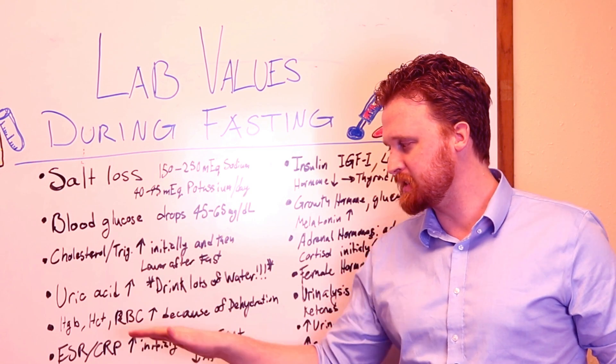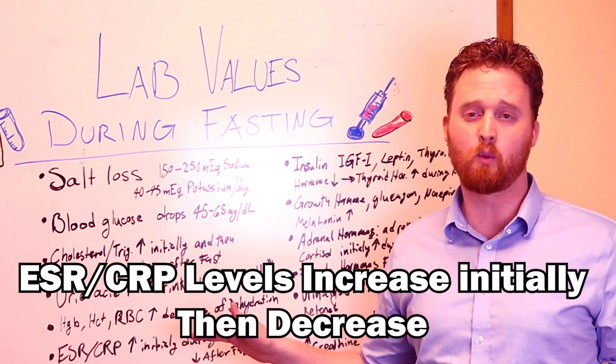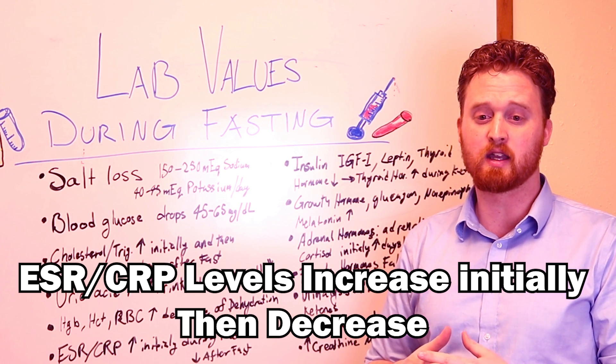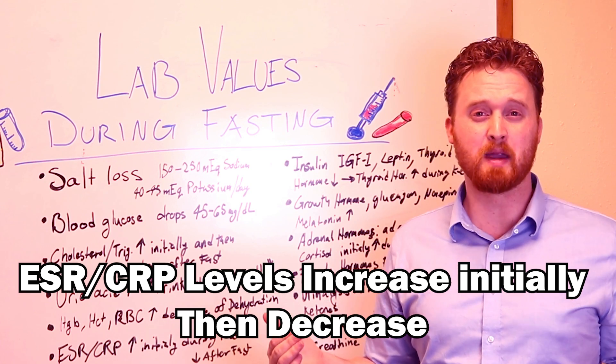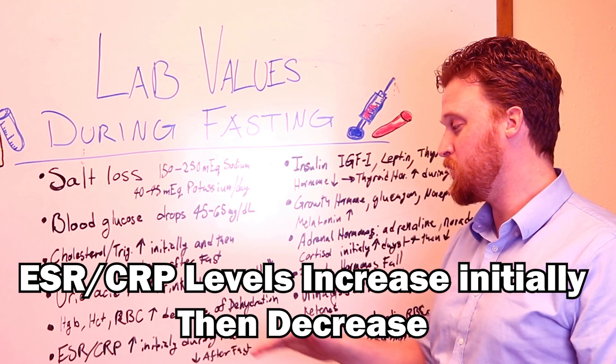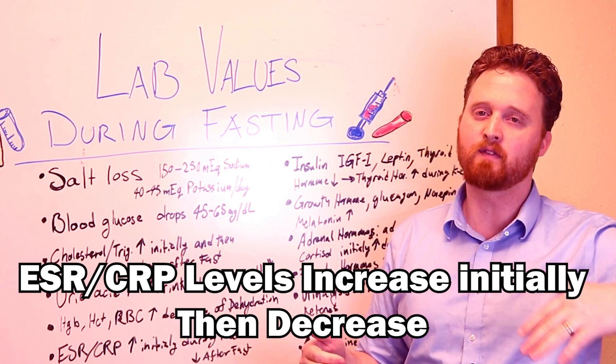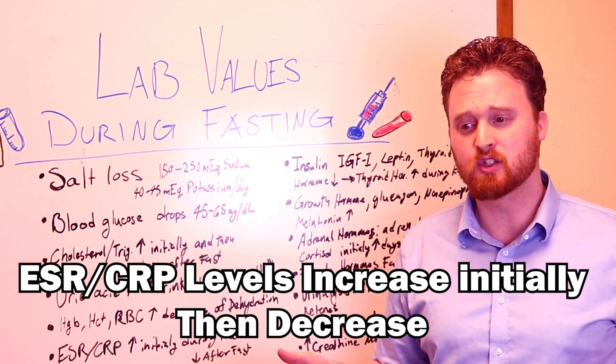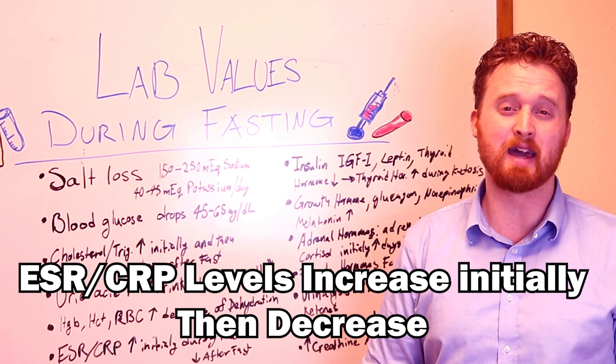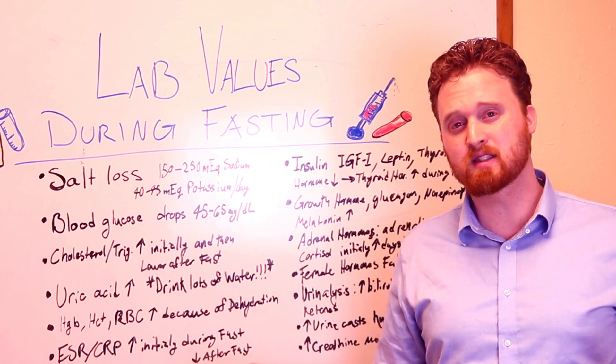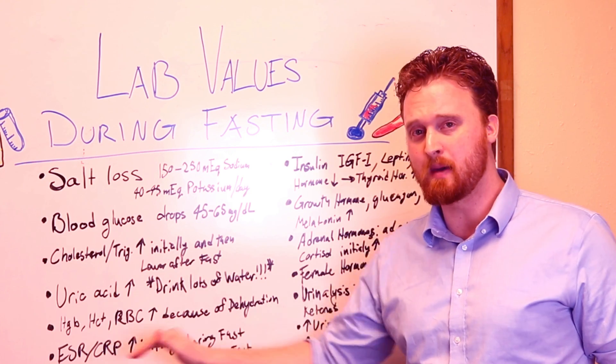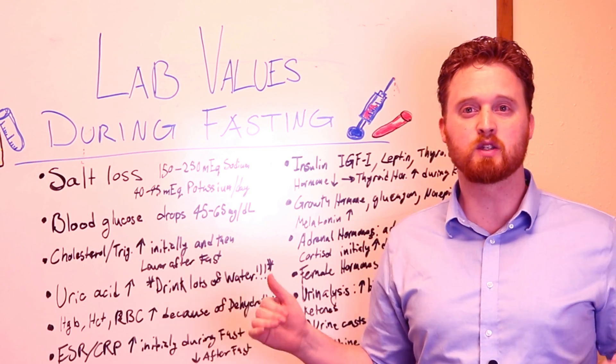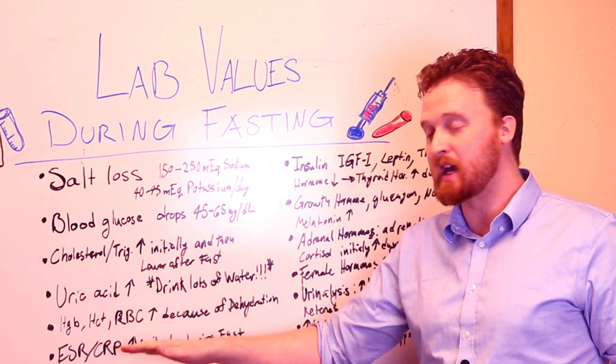ESR and CRP levels do increase. Those are two typical things that do elevate, it's a marker for inflammation in the body and they do elevate initially during fasting. But then afterwards you'll see them decrease than what they initially were before the fast. We have talked about this before in our fasting videos, that inflammation does decrease with fasting. And this is a marker that you can measure, ESR and CRP levels in your blood work. Definitely check that, especially if you tend to have inflammation issues.